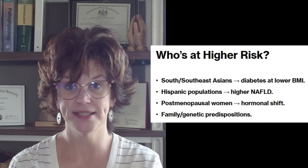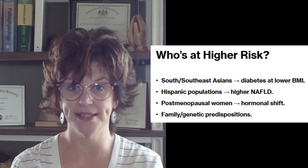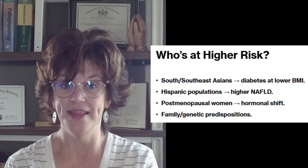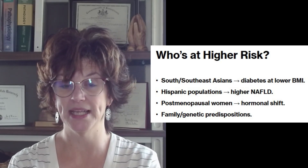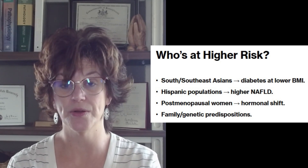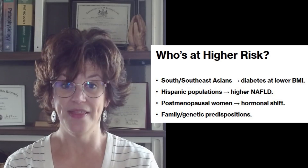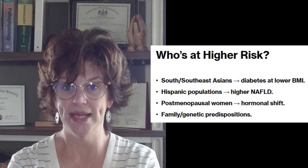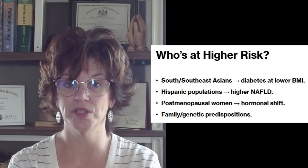Who's at risk? South and Southeast Asians have higher insulin resistance and fatty liver at lower BMIs — they're called TOFIs: thin on the outside, fat on the inside. The Hispanic population has a higher prevalence of NAFLD, or non-alcoholic fatty liver disease. Post-menopausal women, as estrogen levels come down, experience hormonal shifts that drive fat storage to the belly. Of course, if you have a family history of diabetes, fatty liver, or heart disease you may be more prone to it, and certain genetic variants like PNPLA3 increase your susceptibility.